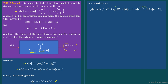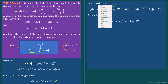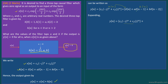Using the distributive property of convolution, x[n] convolved with δ[n] gives x[n]; x[n] convolved with a·δ[n−1] gives a·x[n−1]; and x[n] convolved with b·δ[n−2] gives b·x[n−2]. So y[n] = x[n] + a·x[n−1] + b·x[n−2].